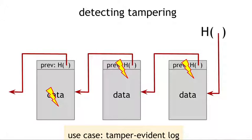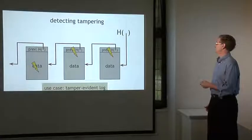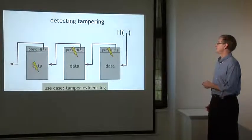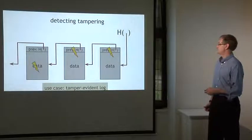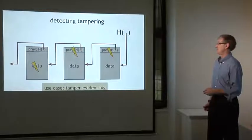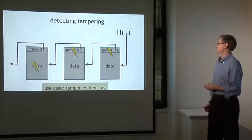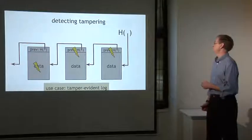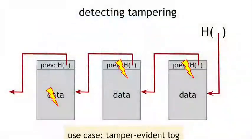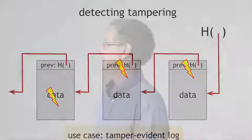Unless the adversary also tampers with the block further up the chain, the hash of that block won't match the hash we're holding onto at the head — and that he can't tamper with, because it's the value we remembered as the head of the list. The upshot is that if the adversary wants to tamper with data anywhere in the entire chain, he has to tamper with hash pointers all the way back to the beginning, and he'll ultimately run into a roadblock at the head of the list. So just by remembering that one hash pointer, we've remembered a tamper-evident hash of the entire list back to the Genesis block. That's a tamper-evident log built out of a blockchain.